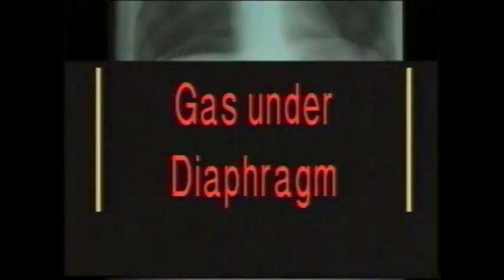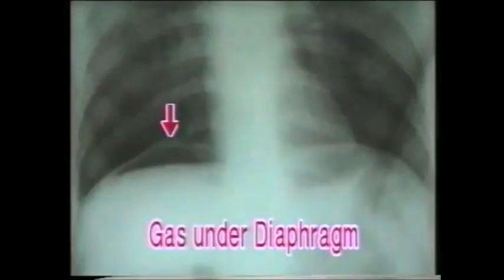Gas under diaphragm: In a standing x-ray of the abdomen, free gas in the peritoneal cavity rises to the highest level and comes to lie under the diaphragms, more commonly under the right dome of diaphragm above the liver. Note the crescent-shaped black radiolucent shadow of gas under the right diaphragm, shown by the red arrow.